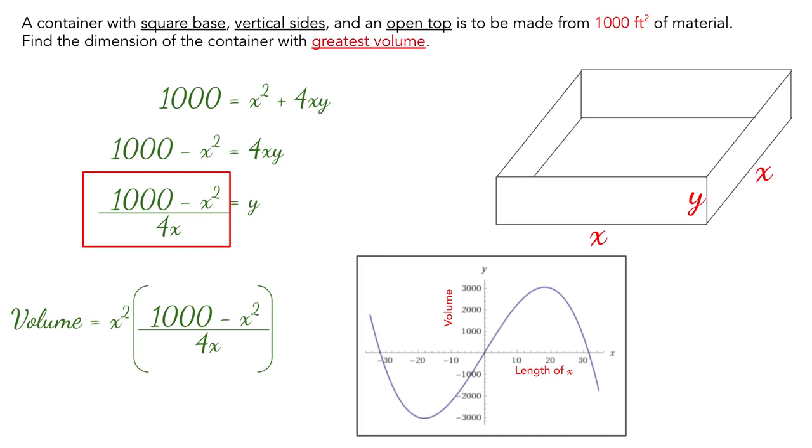All right, so now, since we're looking for the greatest volume, and we know our domain, which is from zero to 30 something, then we are going to look for the largest value from the graph in the given domain. And we're going to look at this point. If you use a calculator to find this point, you will find out that it's going to be 18.257 for the x value, and the function value is going to be 3042.9.